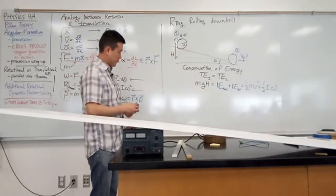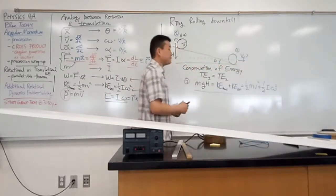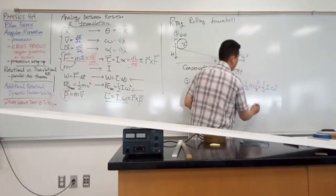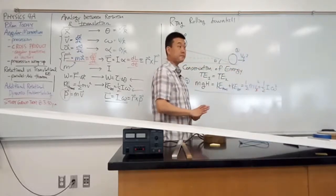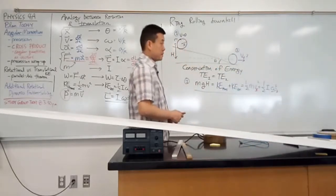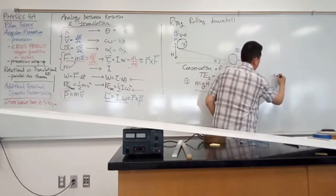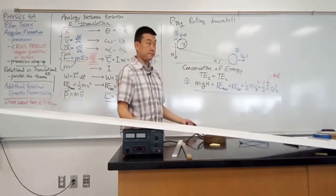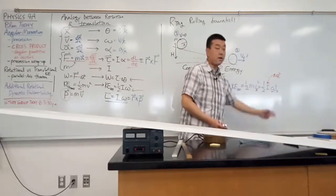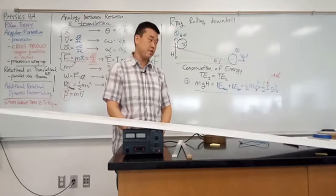I have one equation but two unknowns: I don't know the final velocity, and I also don't know the final angular velocity. I do know that I for a ring is mr². But I don't know my final dynamic quantities — neither v nor omega. That means I need one more equation to actually solve this problem.